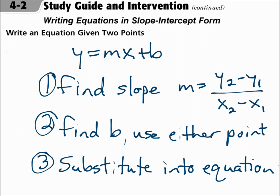Sometimes they don't give you the slope, and all they give you is two points that the line goes through. You still need to find the slope first, and use the slope formula: m equals y2 minus y1 over x2 minus x1. Then find b using either point and the m, substituting in to find b. And then put your m and your b into the final answer — find the slope first, then find the y-intercept, and then substitute in to get your final answer.